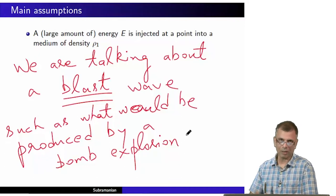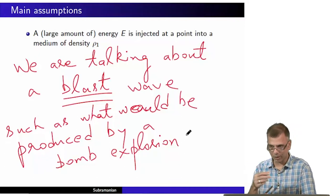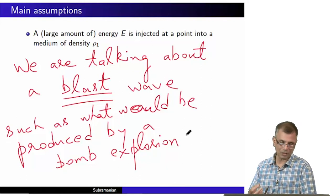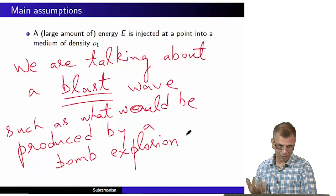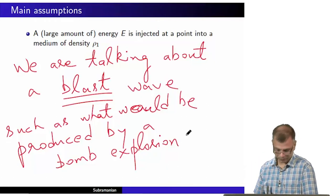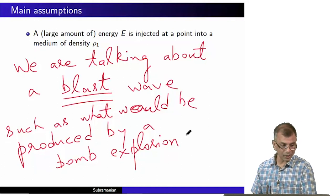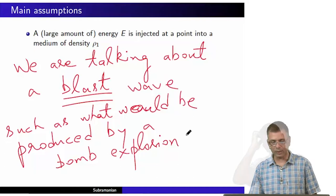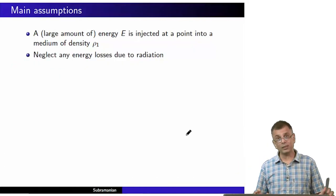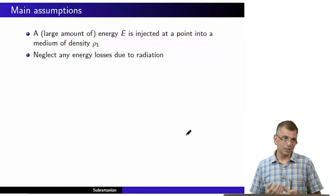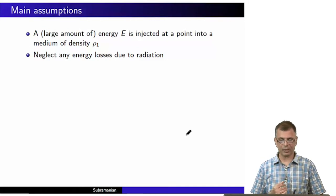Of course, a large amount of energy is never injected into a point of zero dimensions, but in practice what this means is that there's a large amount of energy injected into a very small region. The density of the medium into which this energy is injected is ρ₁. We neglect any energy losses due to radiation — in other words, as the shock propagates, it accelerates particles, and those particles will radiate.